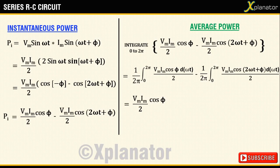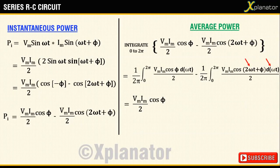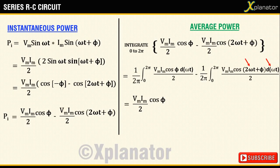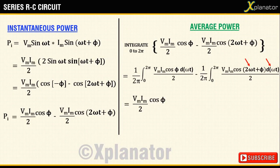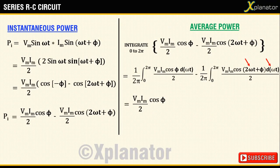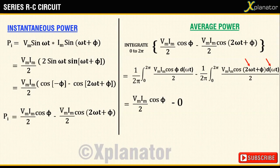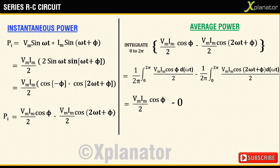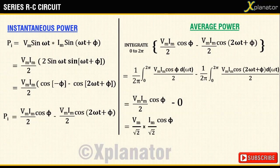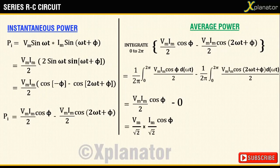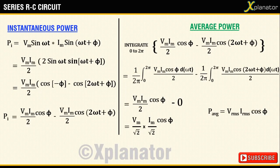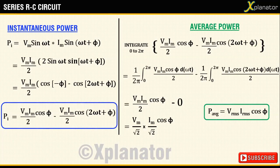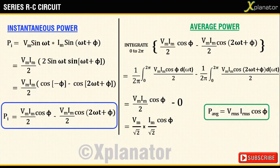Integration of that part will give VmIm/2 into cos phi, while the second term has cos of ωt and we know that average value of cos is 0 from 0 to 2π. So the second part will return a value 0. The 2 in the denominator may be written as root 2 into root 2, hence the equation can be simplified to Vm/√2 into Im/√2, which can further be written as Vrms into Irms into cos phi.